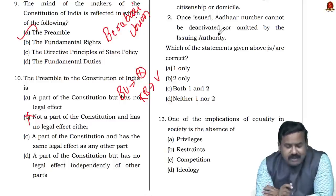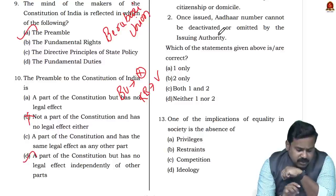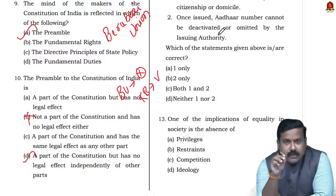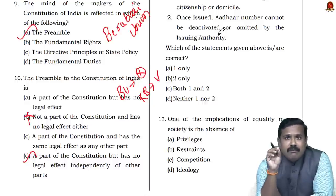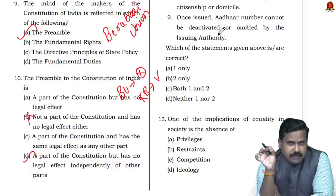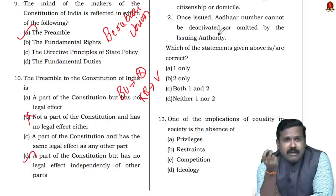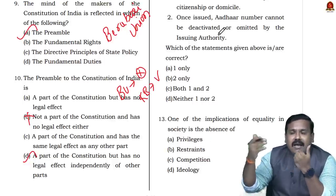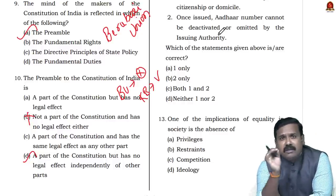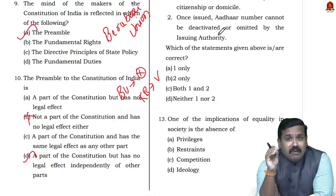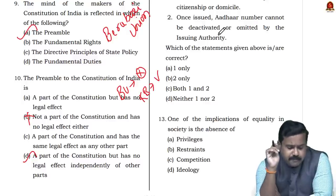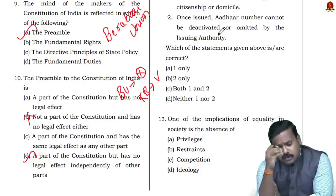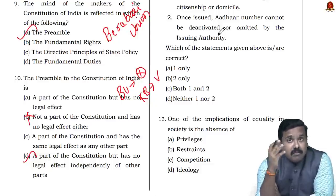Question 10: Whether the Preamble has the same legal effect — the answer is D. Both in Berubari and in Keshavananda Bharti, it was held that the Preamble is not a source of any substantive power. It does not give power to any authority or organ on its own. The power is already given in the other provisions of the constitution, and the Preamble merely reflects that. Preamble on its own independently does not give any power. The only difference is that in Berubari they said it is not a part, while Keshavananda Bharti said it is.